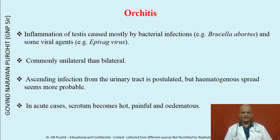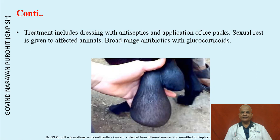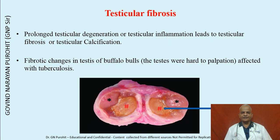Inflammation of the testis, known as orchitis, may be caused by bacterial infections such as Brucella and viral agents such as epivag. It is commonly unilateral. Ascending infection from the urinary tract is postulated, but hematogenous spread seems more probable. In acute cases, the scrotum becomes hot, painful, and edematous. Treatment includes dressing with antiseptics and application of ice packs; sexual rest is given and broad-spectrum antibiotics with glucocorticoids are suggested. Prolonged testicular degeneration or orchitis can lead to testicular fibrosis or calcification, as seen in buffalo bulls affected with tuberculosis.